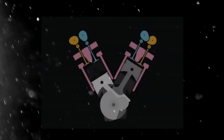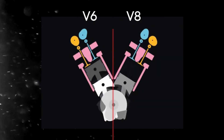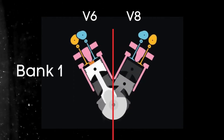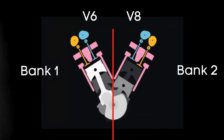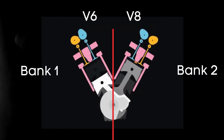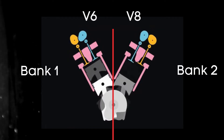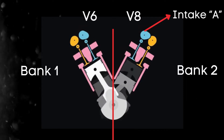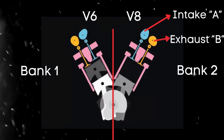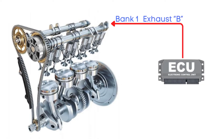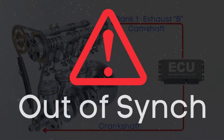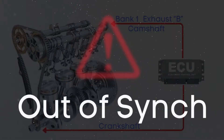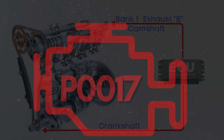In the case of V6 or V8 engines, there are two camshafts: bank 1 and bank 2. For dual overhead camshaft (DOHC) engines, there are two camshafts per bank — intake and exhaust. When the ECU detects that the bank 1 exhaust camshaft position and crankshaft are out of sync by a specific degree, it triggers the P0017 code.